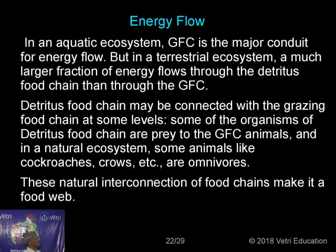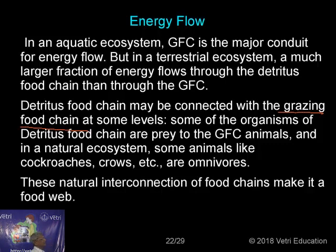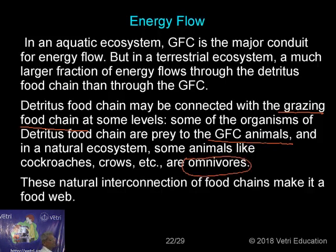In an aquatic ecosystem, the grazing food chain (GFC) is the major conduit for energy flow. But in a terrestrial ecosystem, a much larger fraction of energy flows through the detritus food chain than through the GFC. The detritus food chain may be connected with the grazing food chain at some levels — some organisms of the detritus food chain are prey to GFC animals. In a natural ecosystem, animals like cockroaches and crows are omnivores, making it a food web.